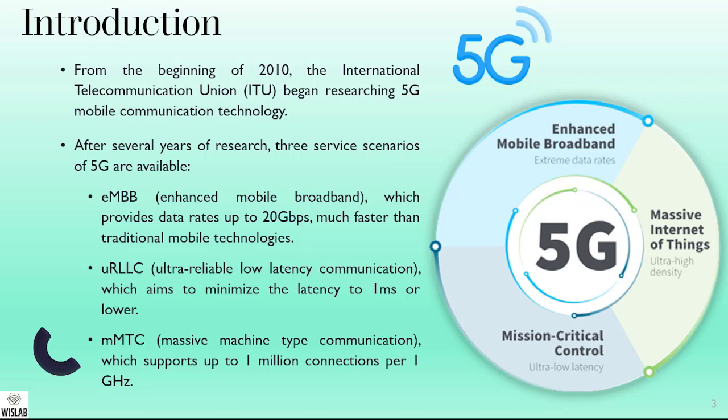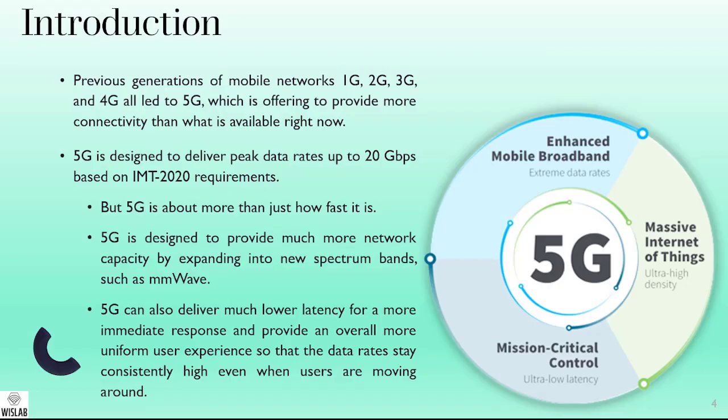The third scenario is the massive internet of things, aiming at ultra high density. Its acronym is massive machine type communication, or mMTC, supporting up to 1 million connections per 1 GHz.